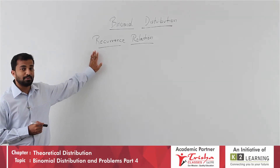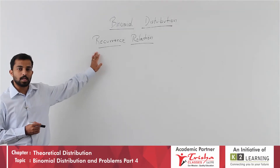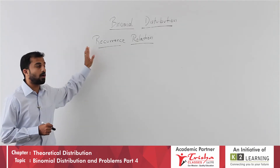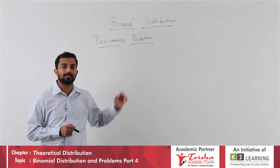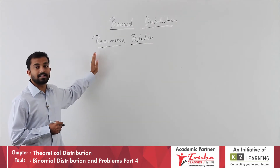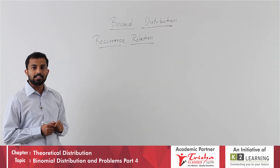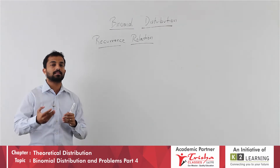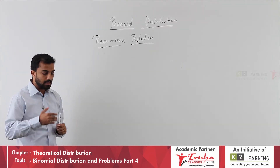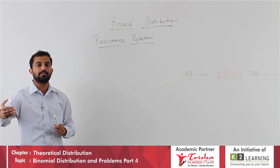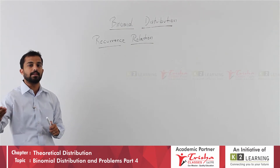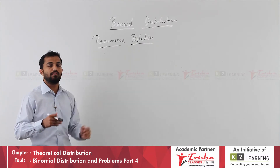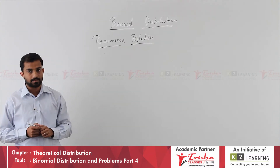Students will be learning a new concept in binomial distribution called the recurrence relation. Recurrence relation is used whenever there are successive probability terms — 0, 1, 2, 3, 4, 5 — in a continuous way. We use the recurrence relation formula to find out the next probability terms.